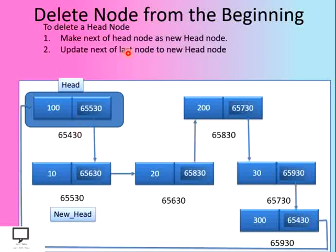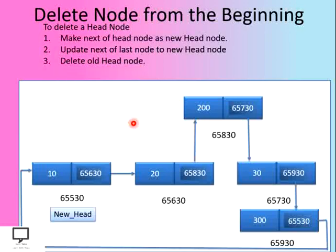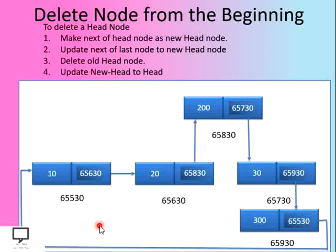So this node is my new head node. After this, we have to update the last node with the address of the new head node — at that next field we update the address of the new head node. Let's assume we have already traversed to that last node. We remove the old link and make a new link to the new head node. Now we are free to delete the old head node. The new head variable is updated to indicate that this node is now the head of the circular linked list.